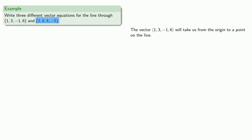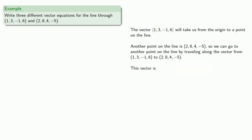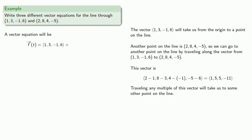We know another point on the line is (2, 8, 4, -5). We can get there by traveling along the vector from (1, 3, -1, 6) to (2, 8, 4, -5), and traveling any scalar multiple of that vector takes us to a different point on the line. So a vector equation is: (1, 3, -1, 6) — to get to a point on the line — plus some scalar multiple of the direction vector of the line.